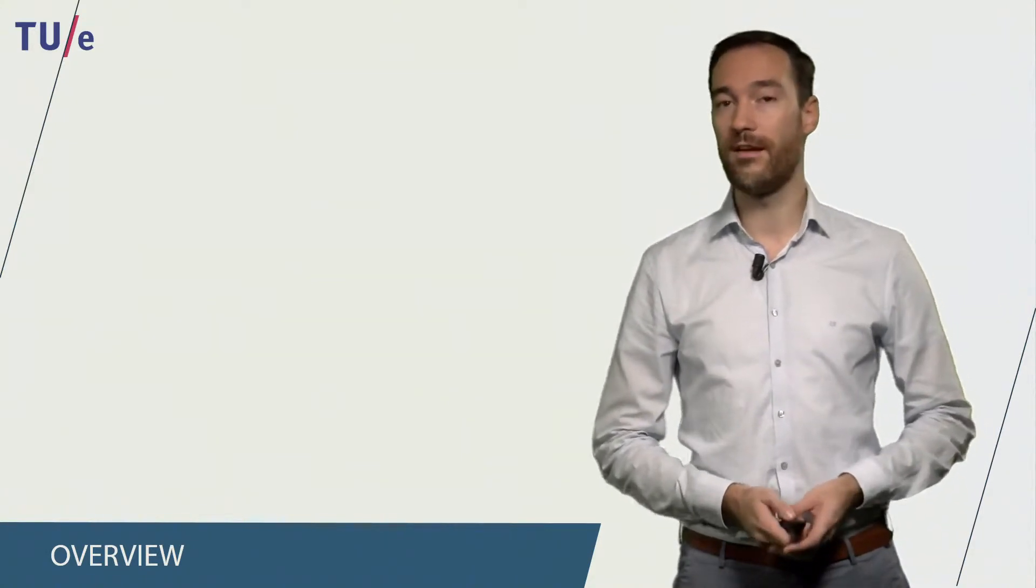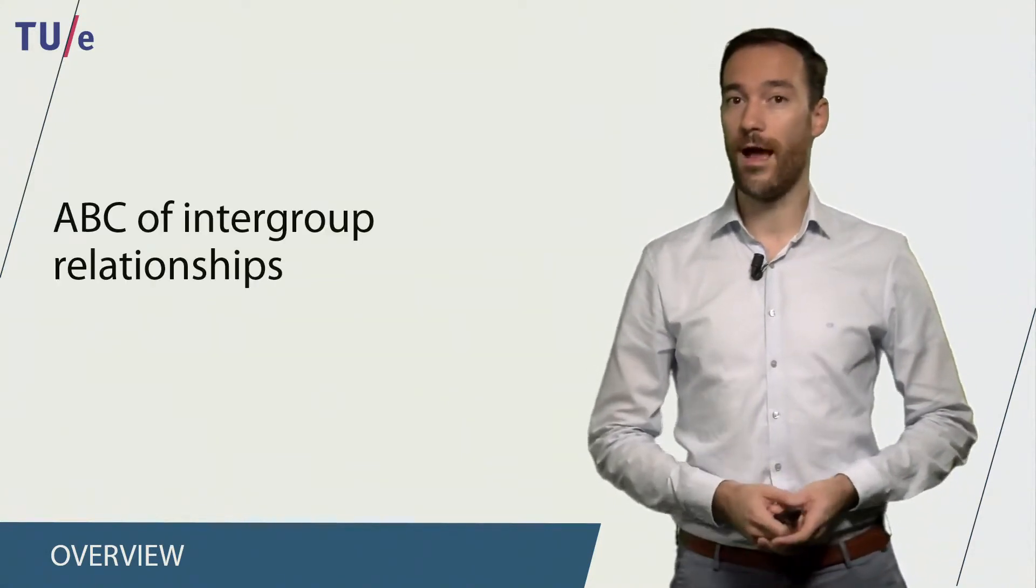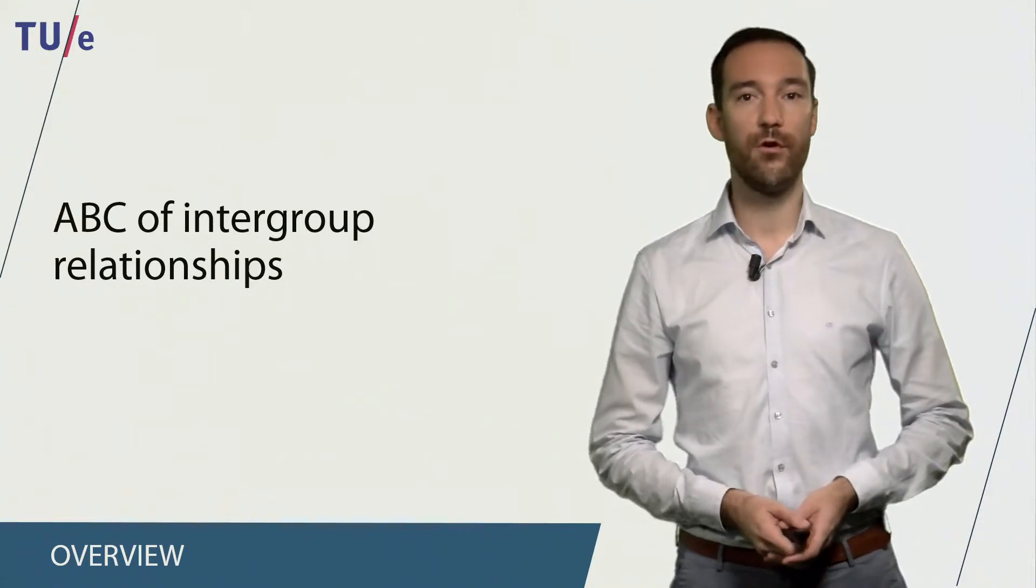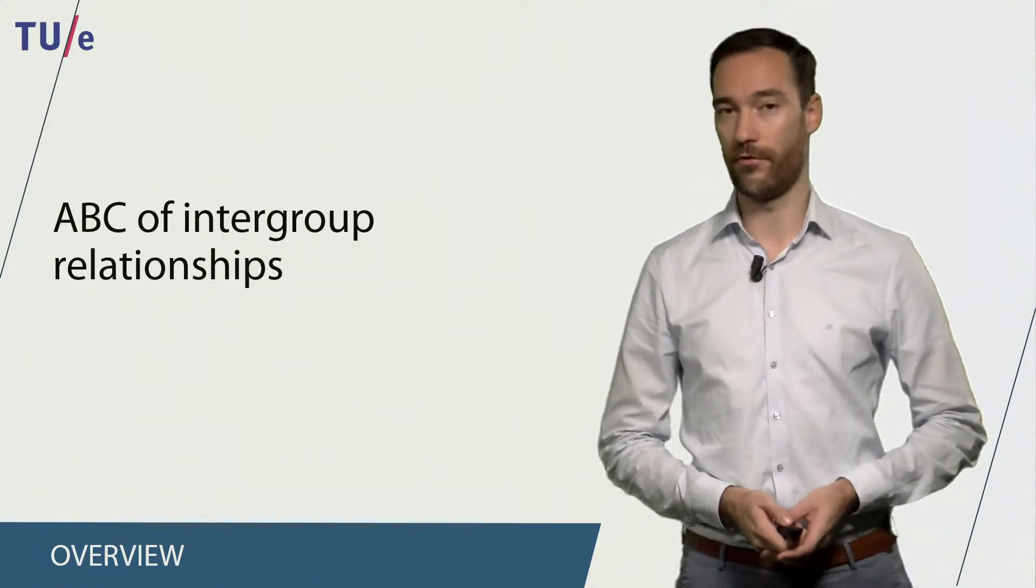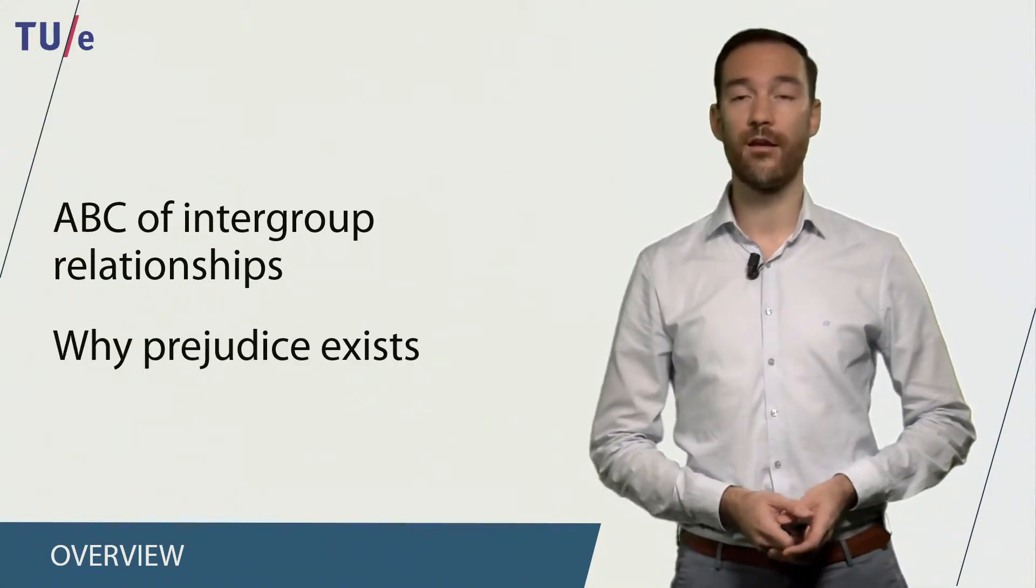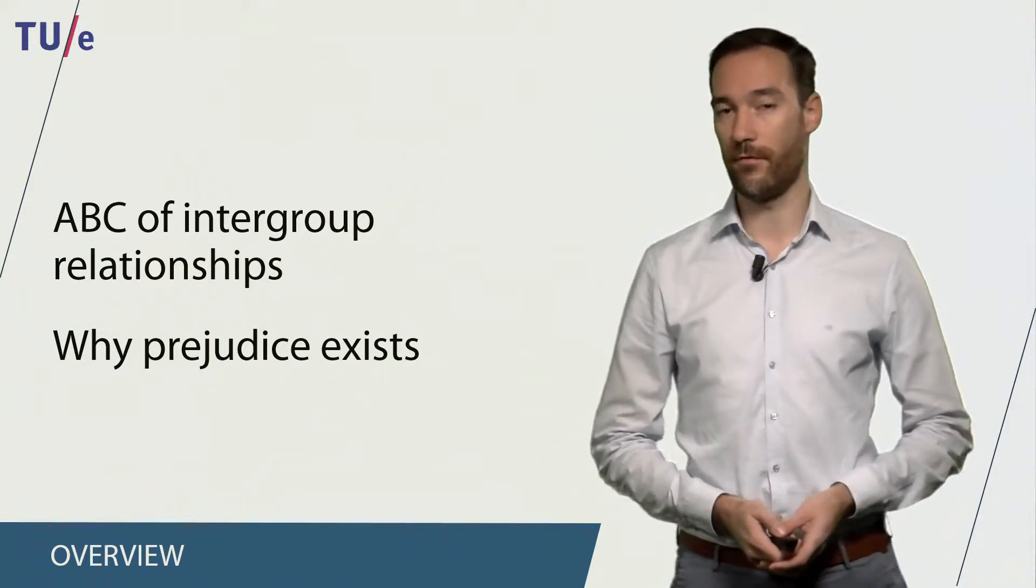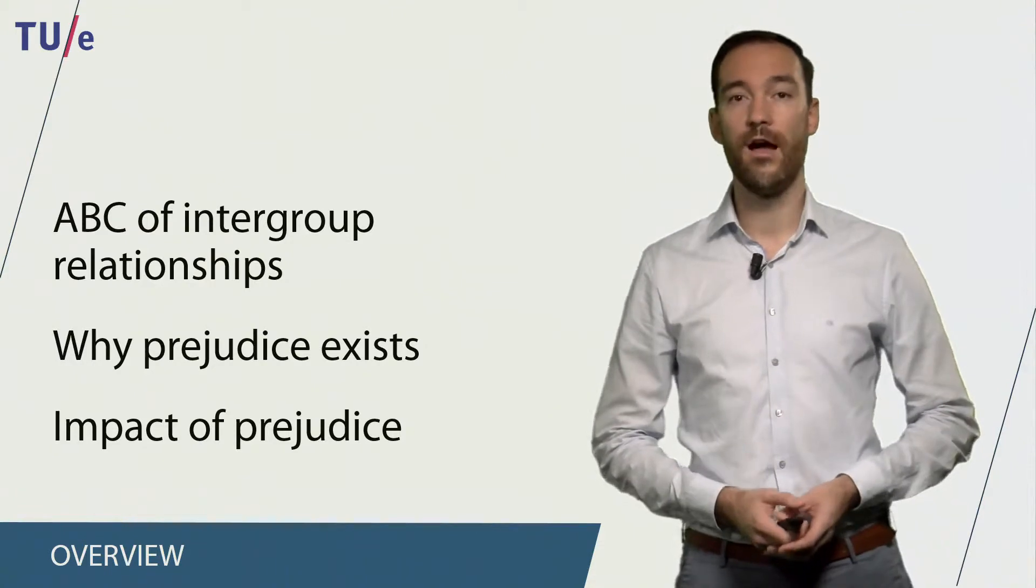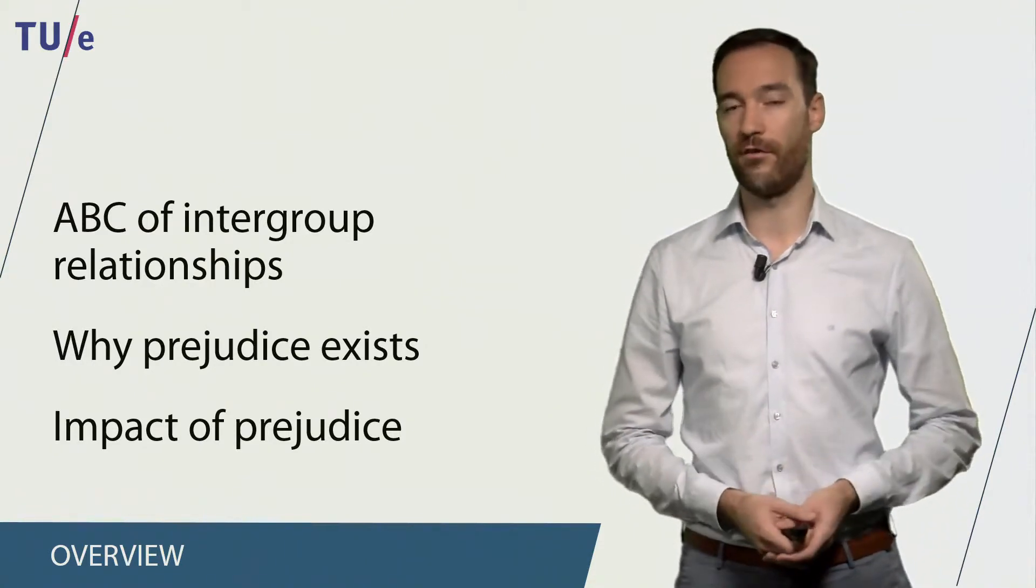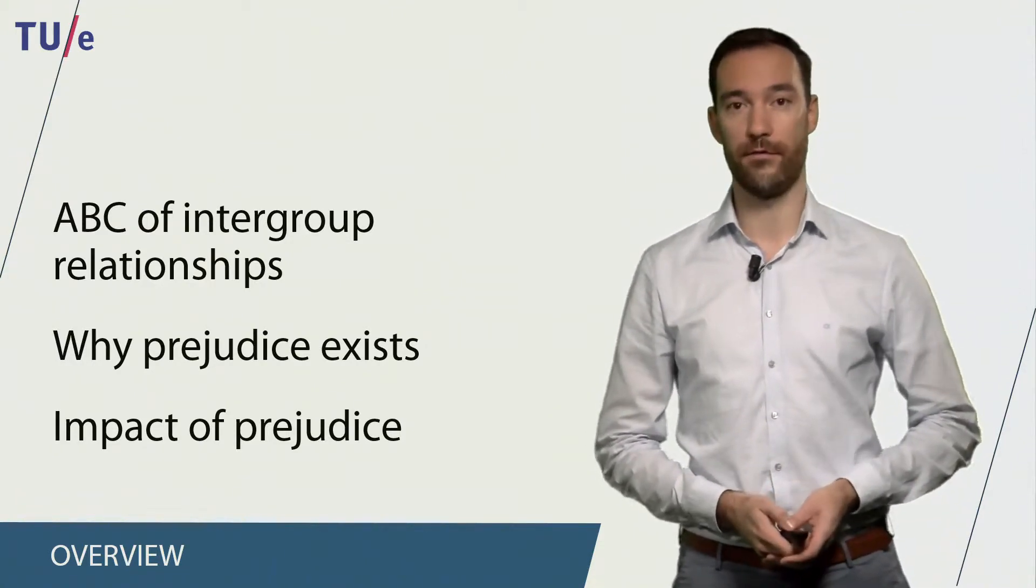This web lecture will be split up in three different parts. In the first part, I will explain what the ABC of intergroup relationships refers to. In the second part, I will explain why prejudice exists along a number of different theories. And finally, I will explain the impact of prejudice on people's lives and their behavior.